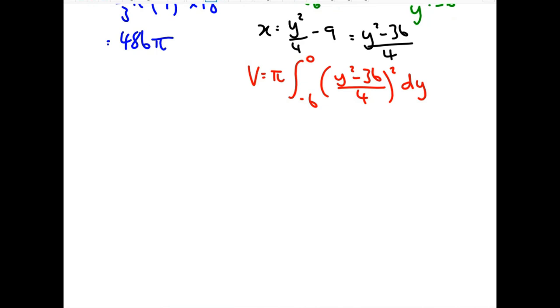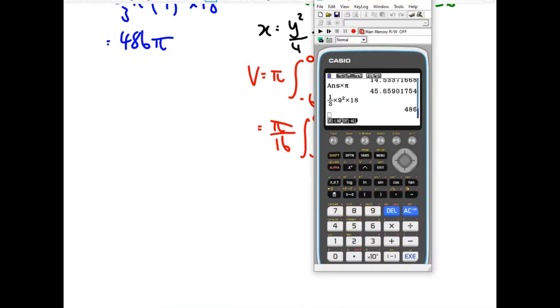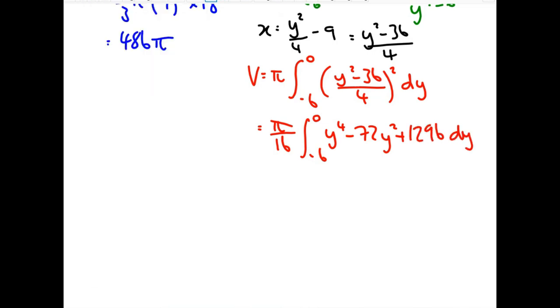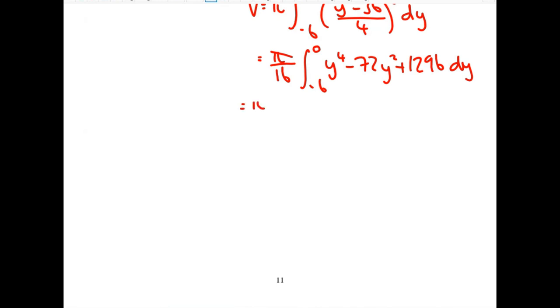Again, not linear inside the brackets. I can't reverse chain rule. I've got to expand it out. So if I square the 4 on the bottom, I get 16 and I've taken that out to the front. On the inside, I get y to the 4 minus 72y squared plus 1296. Expanded that out. We'll integrate it now. So pi over 16 times one fifth y to the 5 minus 24y cubed plus 1296y, limits 0 to minus 6. Sub your limits in. So I know when I sub 0 in, I'll get 0. So I'm just going to write 0. Sub in minus 6.